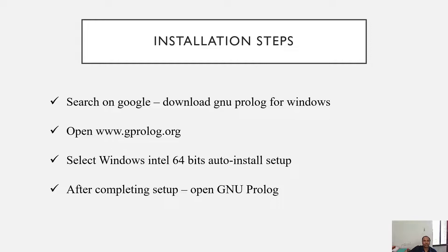First of all, either you can search on Google and then you have to reach this particular link, that is gprolog.org, and you have to find out the appropriate version as per your Windows system configuration. Then you can download that .exe file. So let us first complete these steps.